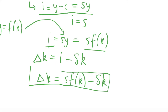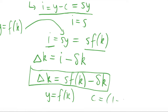This equation — the change in capital equals s times f(k) minus sigma times k — is the fundamental equation of the Solow model. It determines the behavior of capital over time. The change in capital depends on the level of capital and the parameters of depreciation and savings rate. This in turn determines everything else in the model, since output depends on capital, and consumption equals (1 minus s) times f(k), so consumption also depends on capital.